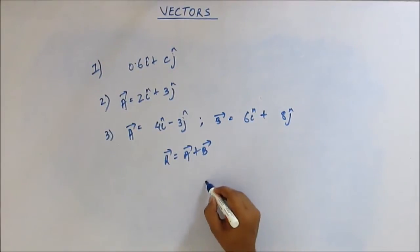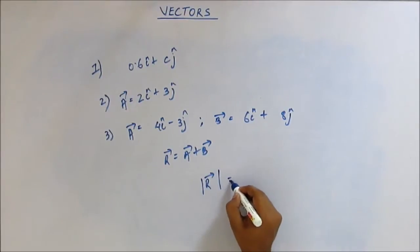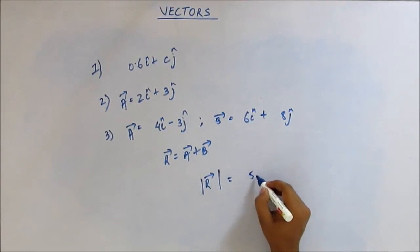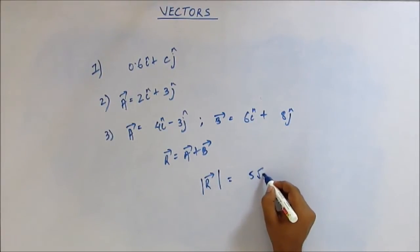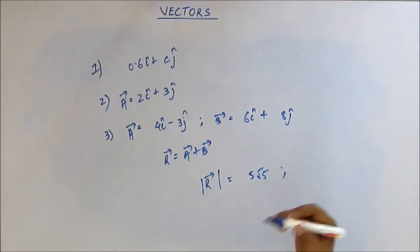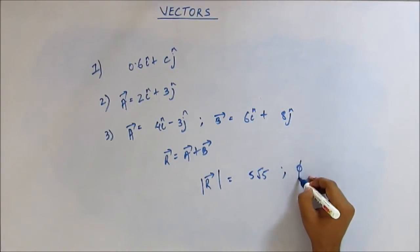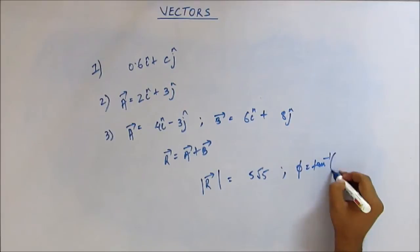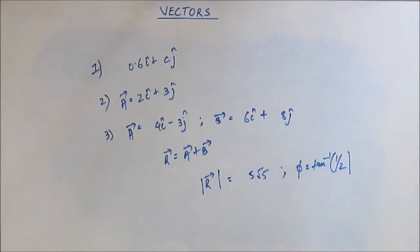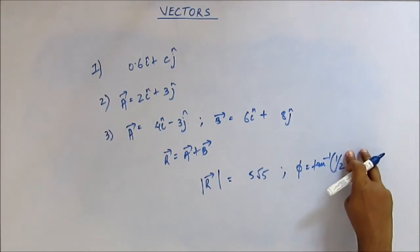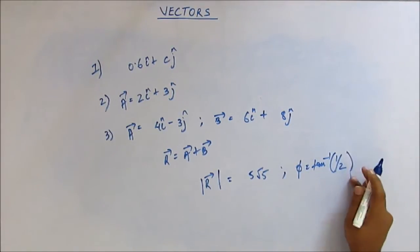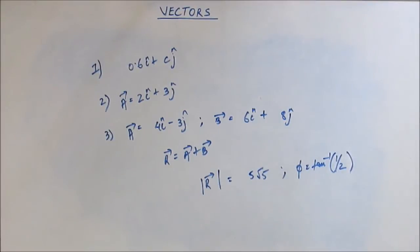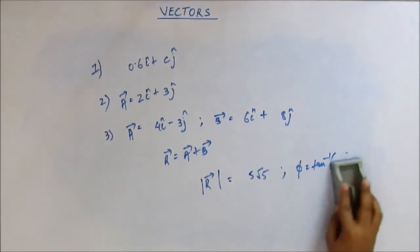The magnitude of R vector is 5√5, and the angle which this vector makes with the x-axis is tan inverse of one half. So this one is simple and we will not be discussing it further.